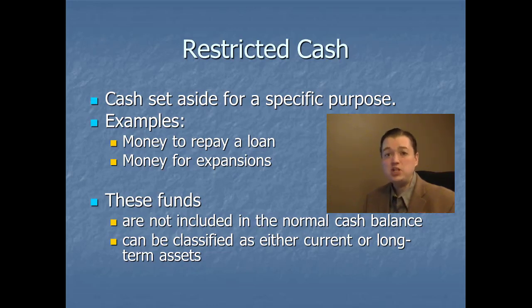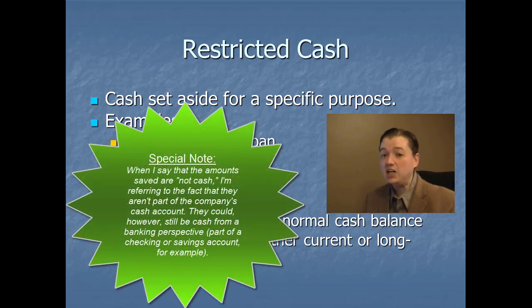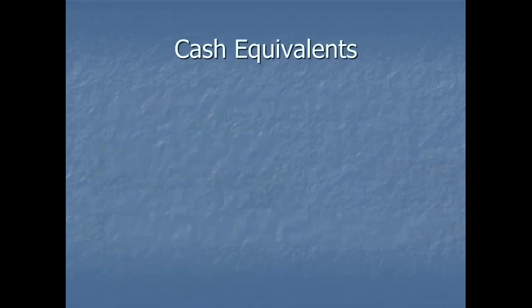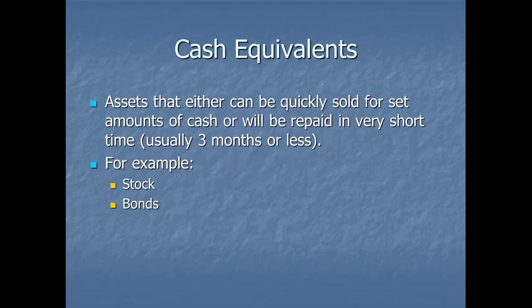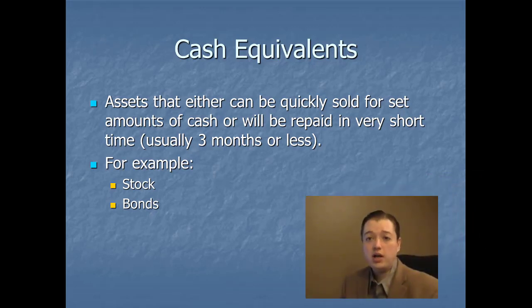Sometimes, especially when we're ready to actually do the expansion or repay the loan, those funds still end up as part of our current assets, although they're still not cash because cash implies a general fund that can be used for anything the business needs to cover. The other distinction with cash is an account commonly called cash equivalents — these are special assets that can be quickly sold into cash. Think of stocks and bonds that are always being sold on the market; we use those just like cash.